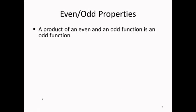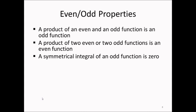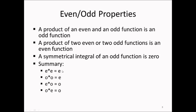Using these properties and additional rules: a product of an even and an odd function is odd; a product of two even or two odd functions is even; and a symmetrical integral of an odd function is zero. To summarize: even times even is even, odd times odd is even, even times odd is odd, and odd times even is odd.